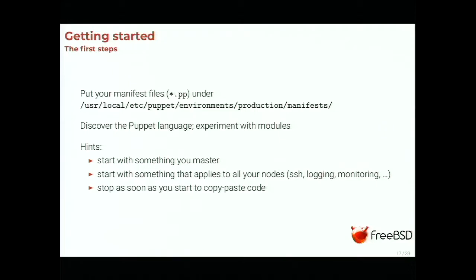A good point is determining what to start with. People often want to start by automating deployment of Puppet itself, which is the worst idea you can have. Start with something you master — something true for all your nodes. You probably have SSH on all nodes, so automating SSH configuration, NTP configuration, or monitoring configuration is a good start. As soon as you feel like you're copying and pasting things, that's a sign something is not right. This step is only to discover the Puppet language. When you start copy-pasting code, you'll want to use what we call a control repo.